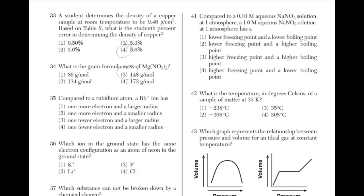Compared to a rubidium atom, a rubidium ion has... You should eliminate answers 2 and 3 because they don't make sense. If the ion has one more electron, it would have a larger radius, and if it had one less electron, it would have a smaller radius. Rubidium is in group 1 and has one electron in its outer shell. That means if it has a charge of +1, it will have lost an electron and will have a smaller radius.